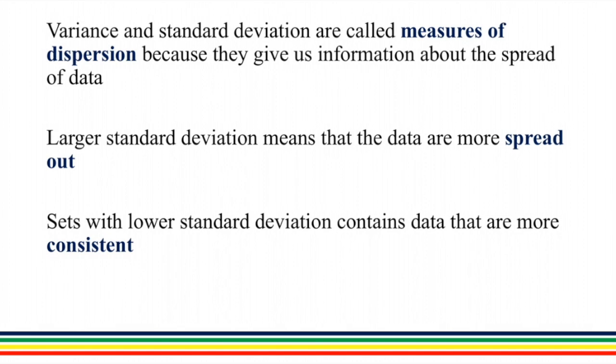Variance and standard deviation are called measures of dispersion because they give us information about the spread of data. Larger standard deviation means that data are more spread out. Sets with lower standard deviation contains data that are more consistent. That is the definition or the meaning of a low standard deviation: the data is more consistent compared to a higher standard deviation.